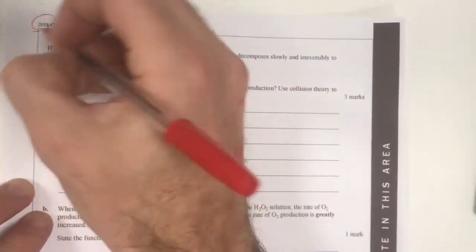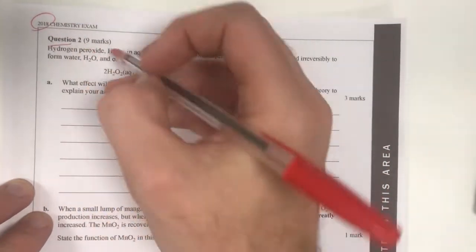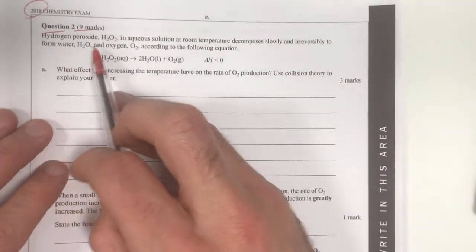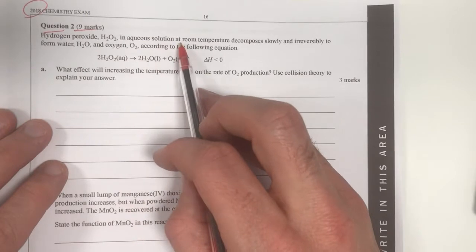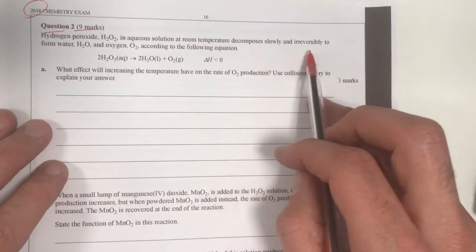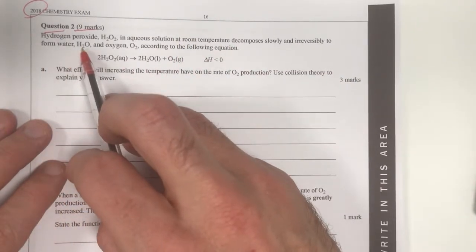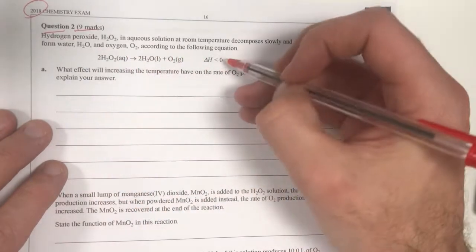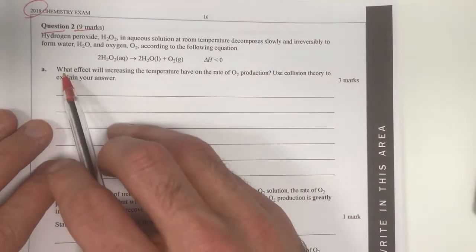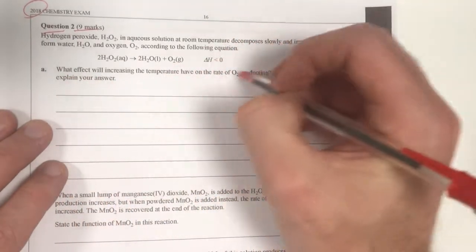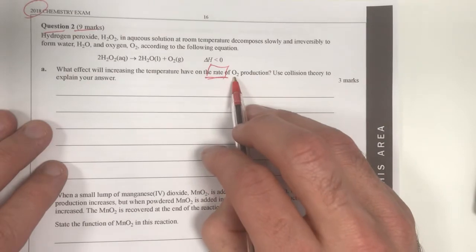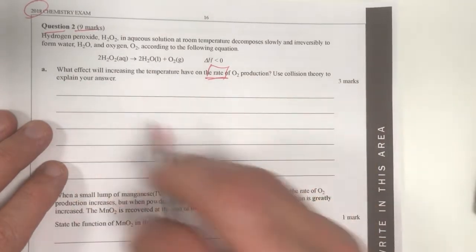Question 2 in the VCAR 2018 exam, worth 9 marks. Hydrogen peroxide in aqueous solution at room temperature decomposes slowly and irreversibly to form water and oxygen gas. According to this reaction it is an exothermic reaction. What effect will increasing the temperature have on the rate of oxygen production? Use collision theory to support your answer.